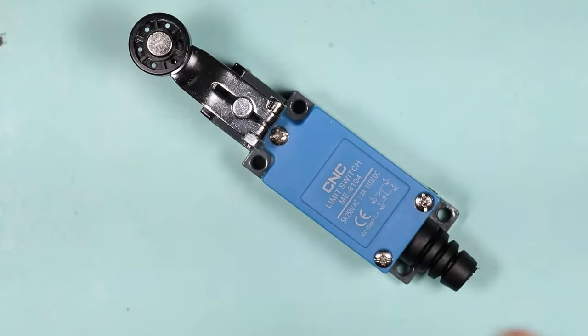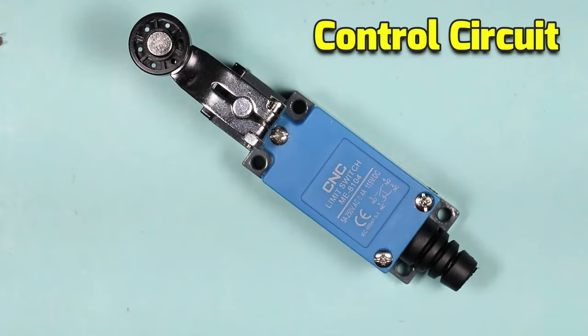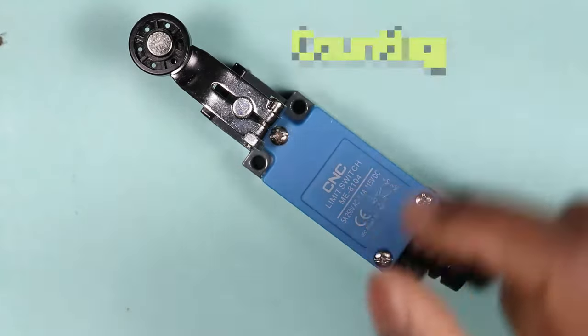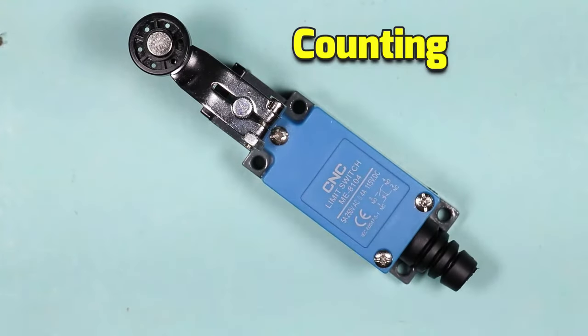We can use this limit switch with a lot of applications. For example, we can use this switch in controlling, interlocking and even for counting the object. So, you can use this switch in numerous ways. Only you have to think about the purpose.